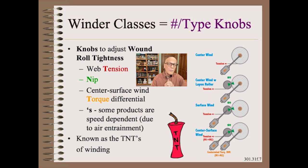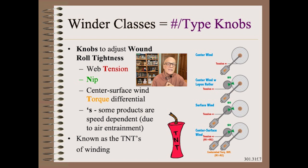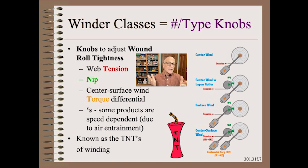If we look at our most controllable parameter of tightness, we must then ask what knobs on the winder make tightness and how they do so. The knobs are known as the TNTs of winding. They stand for tension, nip, torque differential, and the little S stands for speeds for products that are speed dependent. Which knob you have depends on the class of your winder. The classes are center wind, center wind with land roll, surface wind, and center surface wind. This is as much detail as we can go into here — the rest you will need to pick up in school or in a book.